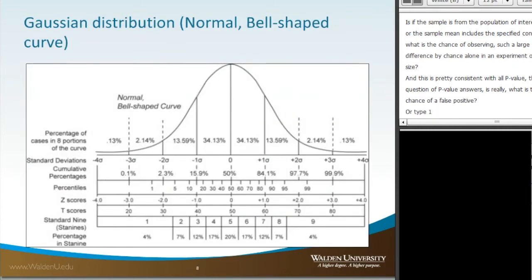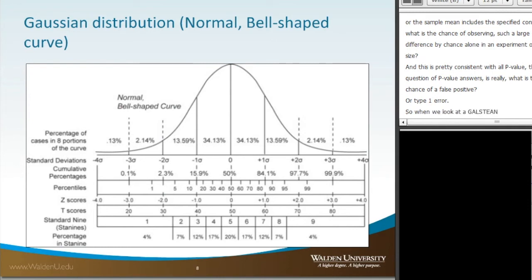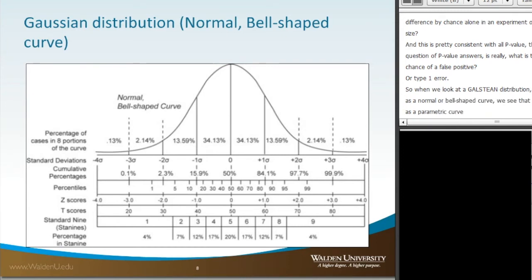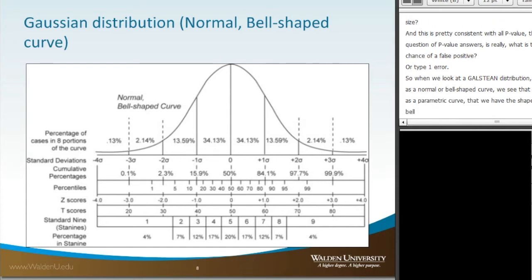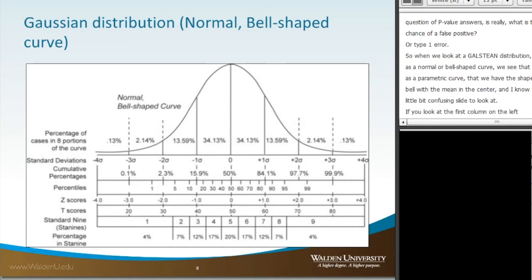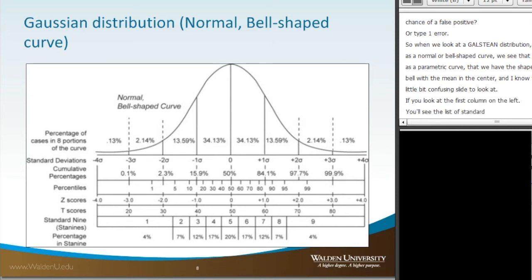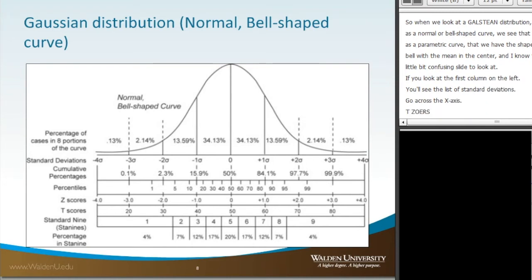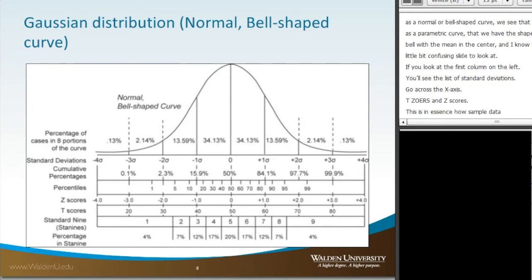When we look at a Gaussian distribution — also known as a normal or bell-shaped curve, and also known as a parametric curve — we see the shape of the bell with the mean in the center. Looking at this slide, if you look down the first column on the left you'll see the list of standard deviations going across the x-axis, along with z-scores and t-scores. This is how the sample data will actually be distributed — this is our Gaussian distribution.